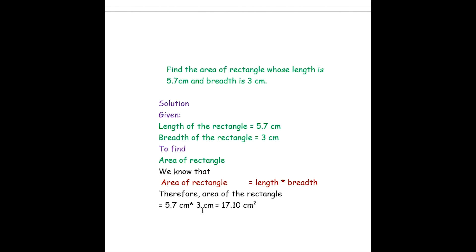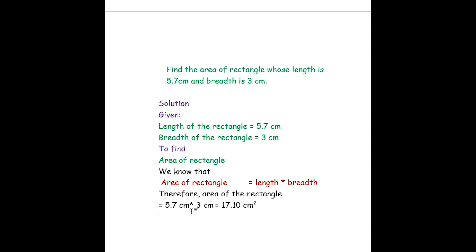Ignoring the decimal point, 57 into 3 gives 171, expressed as 171.0. There is only one digit to the right of the decimal point in 5.7, so we move one digit towards the left, giving 17.10. Centimeter into centimeter gives centimeter squared, so the area of the rectangle is 17.10 cm². Hope you have understood how to multiply decimal numbers — thank you for watching.